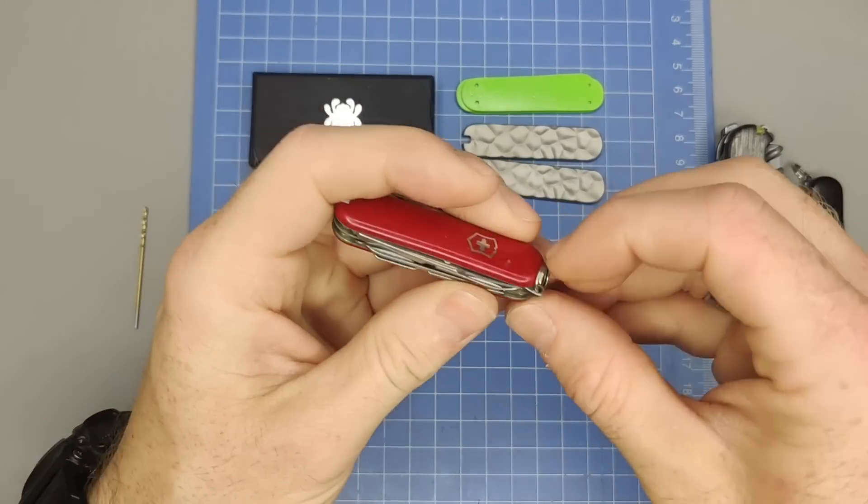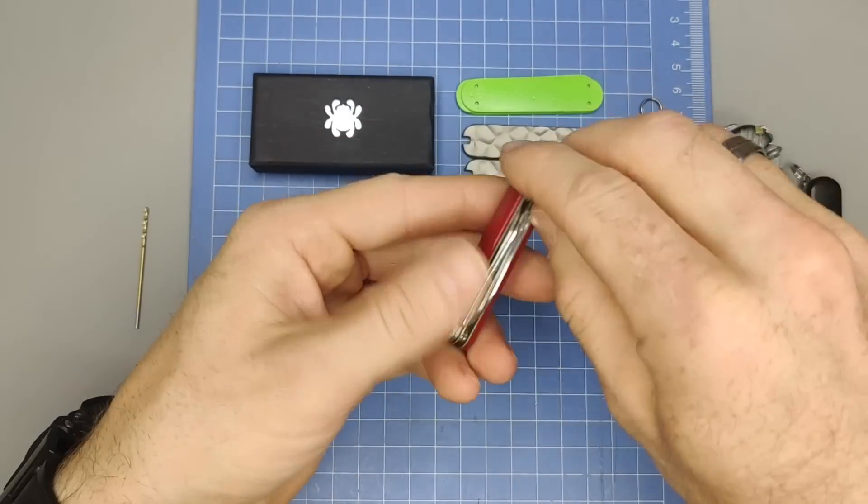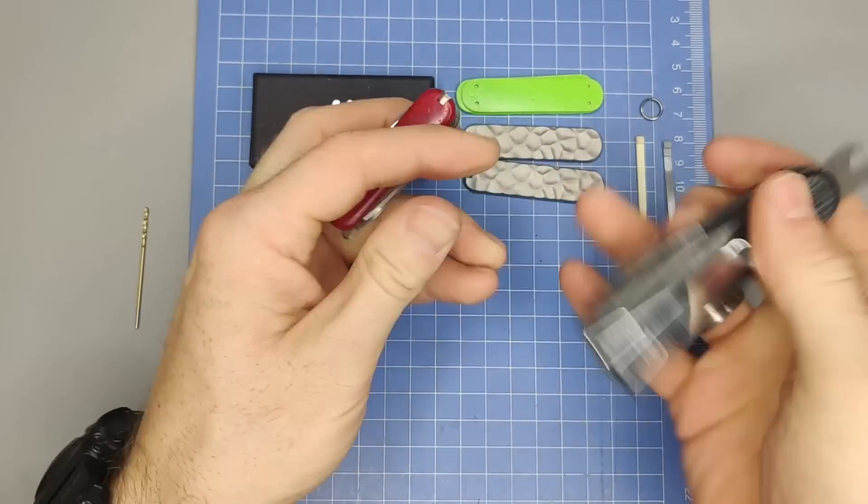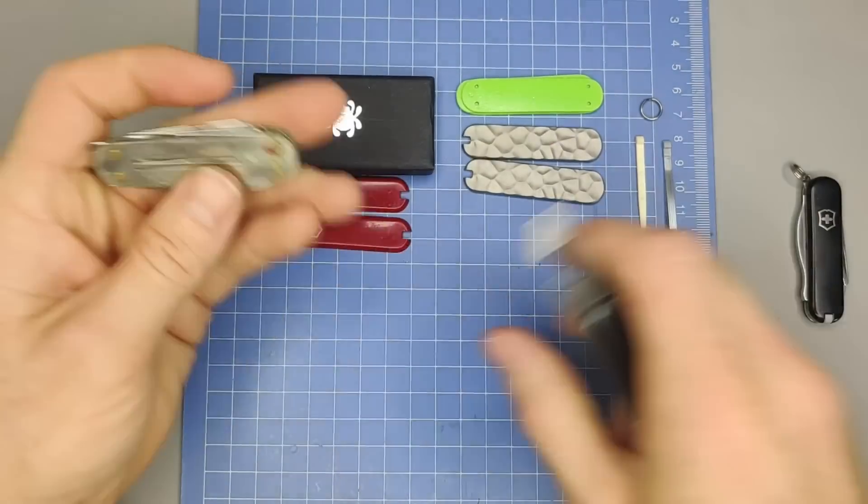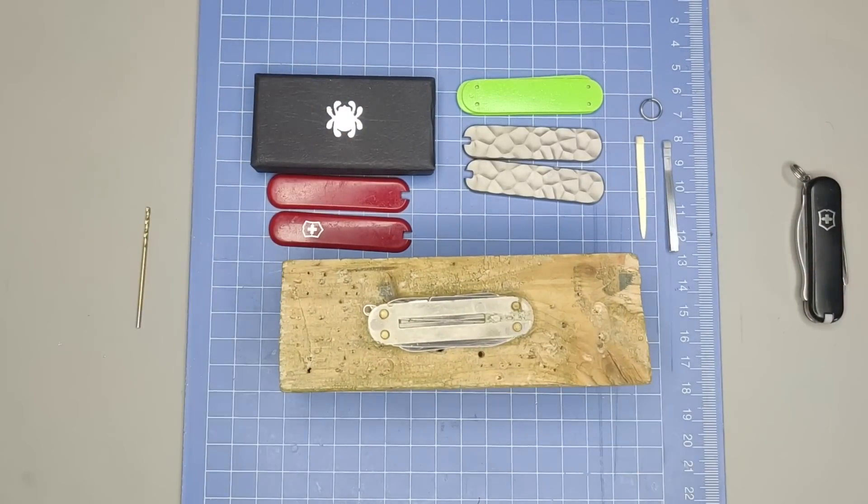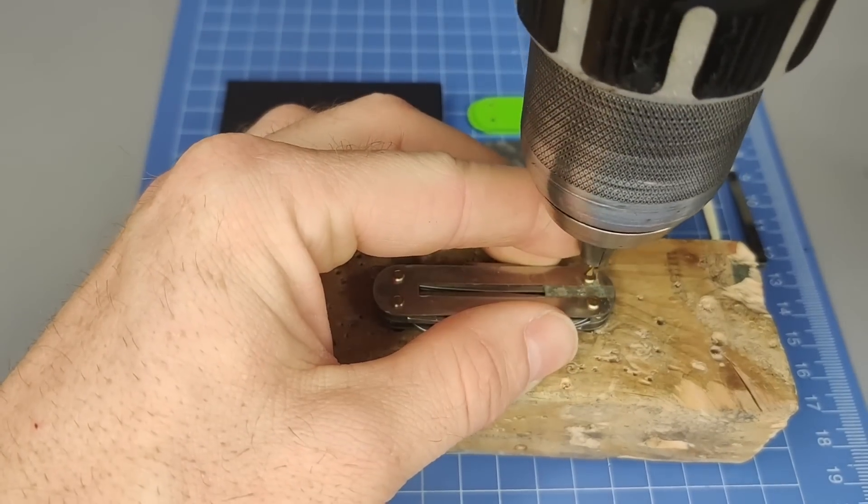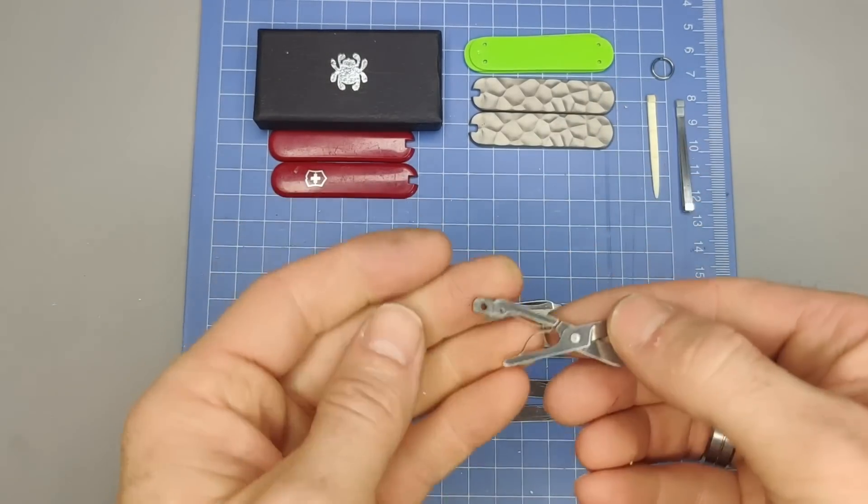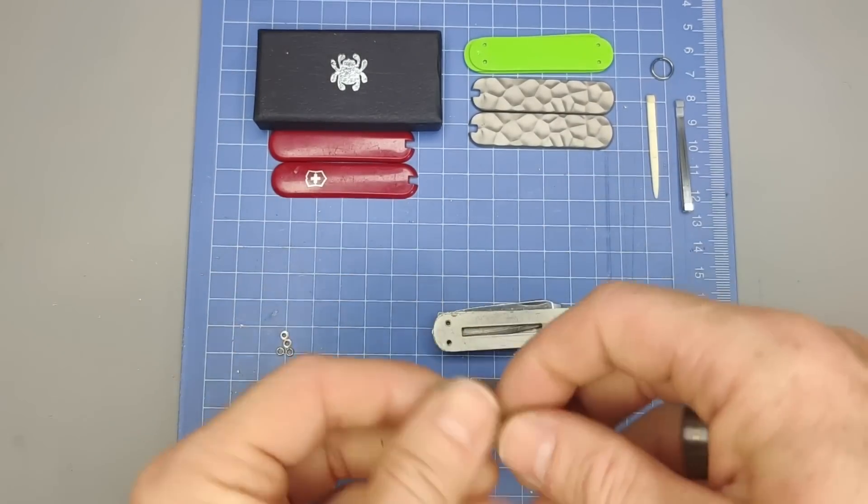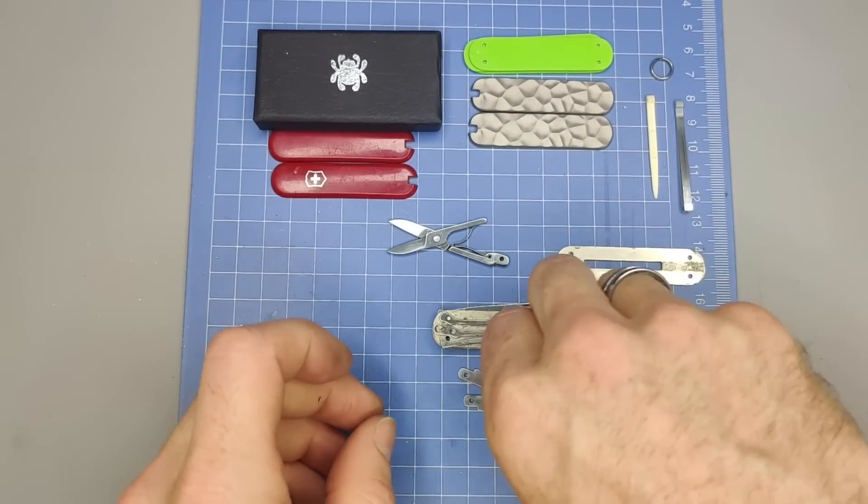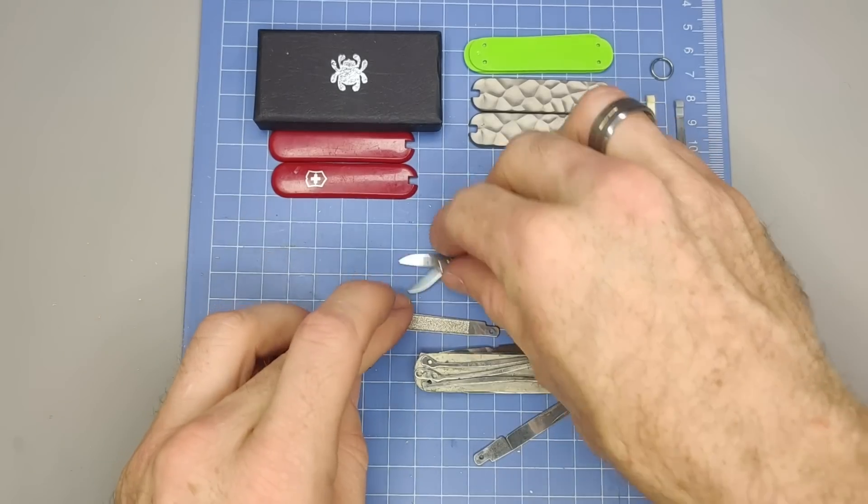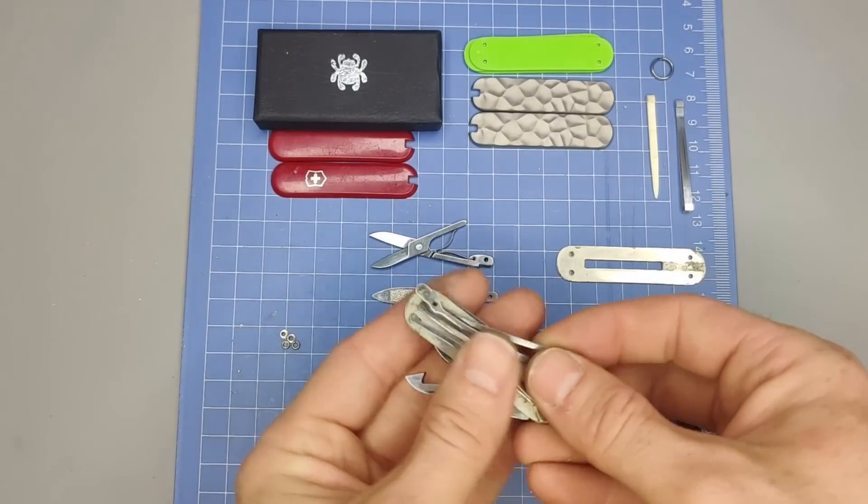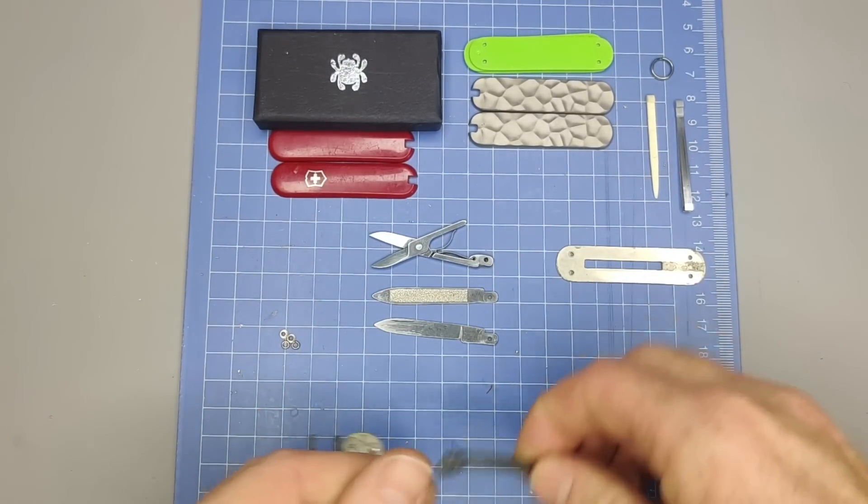So we'll get to that in a minute. Let's go ahead and start with the disassembly. Alright, so since I went a bit far with the drilling, some of the tools have already come out. Let's set these aside now. And these are the springs.